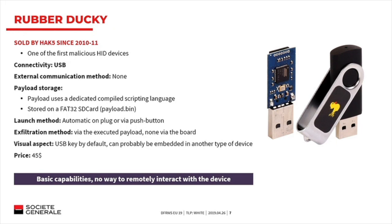Most of you have heard of Rubber Ducky, probably the most well-known HID device and one of the first available on the internet. It's pretty simple — you plug what looks like a USB key and it simulates a keyboard, executing a payload. The payload is stored on the SD card as a compiled binary in FAT32. That's it — it just simulates a keyboard and launches the payload.